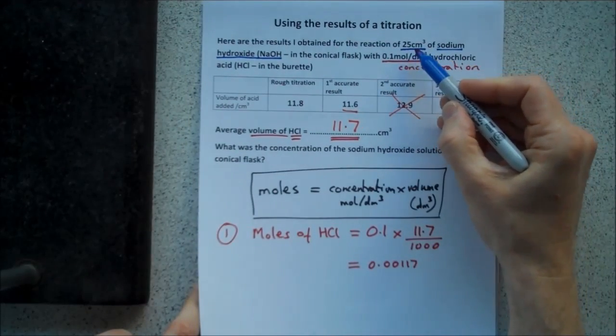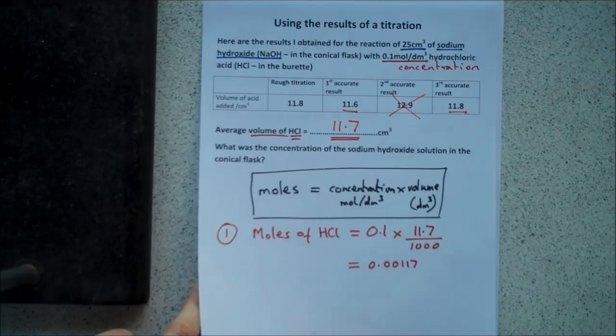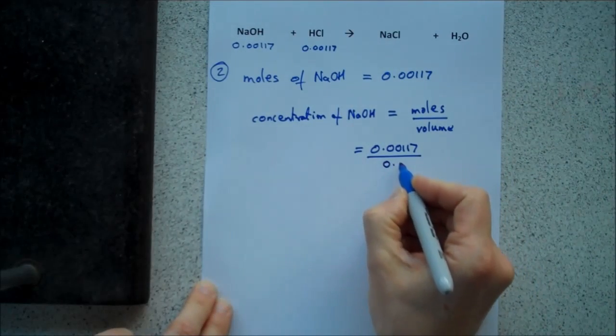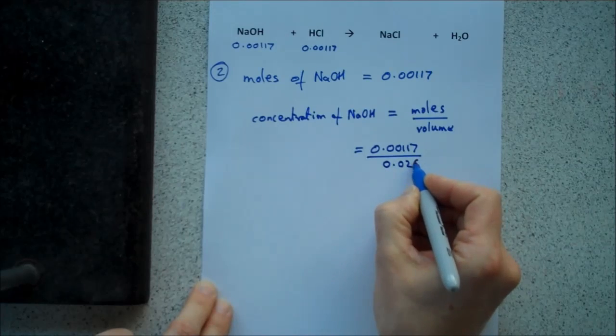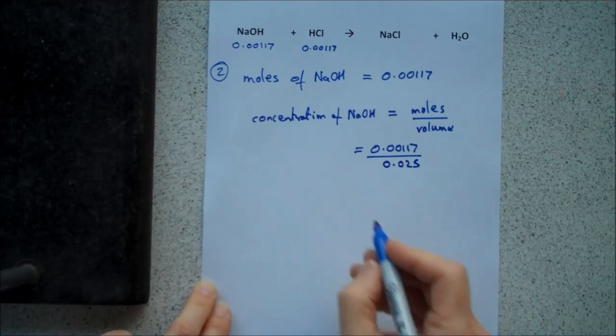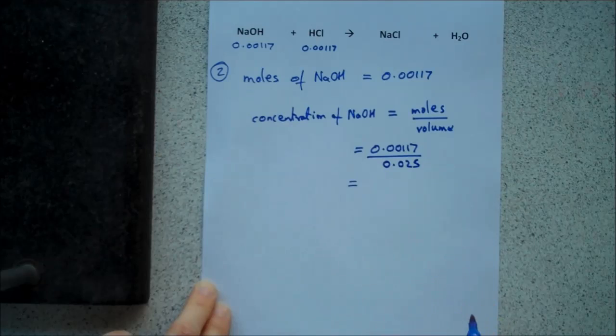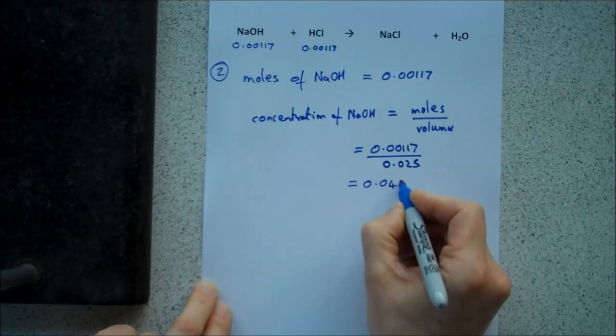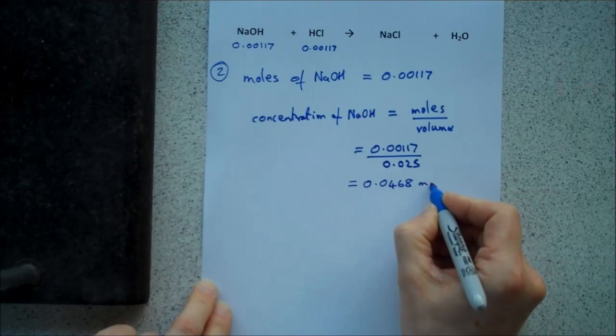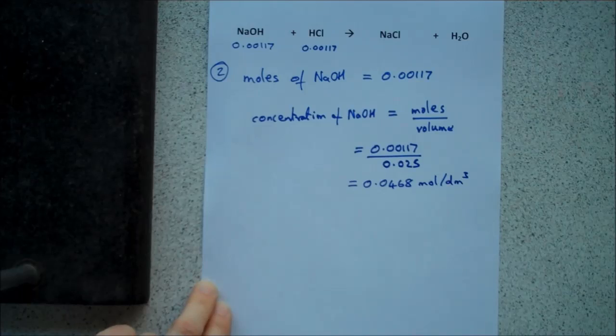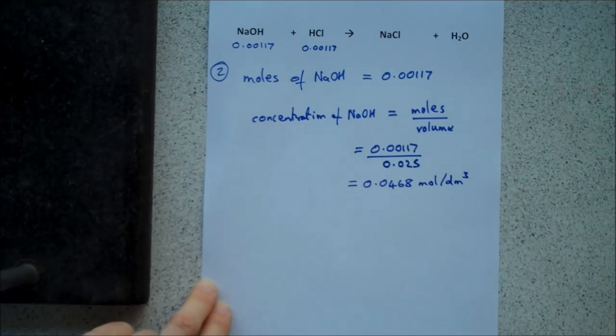Which is 0.00117 divided by the volume of sodium hydroxide. Go back to the original question. There it is. 25 centimetres cubed of sodium hydroxide. So, 25 centimetres cubed is 0.025 decimetres cubed. Don't forget to divide centimetres cubed by 1,000 to get decimetres cubed. And then you put that number into your calculator and you will get 0.0468 moles per decimetre cubed. And that's the calculation then.